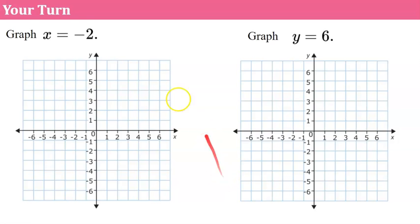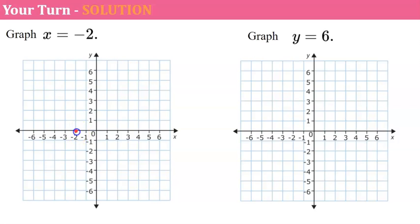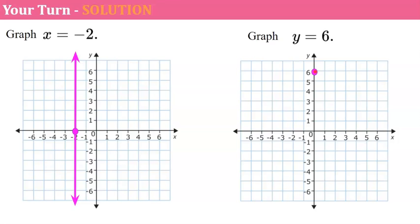Now it's your turn — graph these two linear equations, then come back to check your work. For the first one, we go to the x-axis and plot a point on negative 2, then draw a line through it. This is the equation of a vertical line passing through the x-axis at negative 2. For y equals 6, we go to the y-axis and plot a point at 6, then draw a line through it — a horizontal line passing through the y-axis at 6.